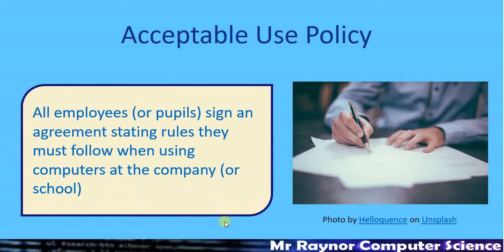Acceptable use policies are set up by many companies and schools. When you join, you're asked to sign an agreement listing rules for how you use computers within that organization. For example, it might say you must not use computers for social networking during office hours, or for anything offensive. There may also be rules such as pupils not being allowed to download or install any software on the network — ways of preventing viruses and other malware being installed, whether deliberately or not.